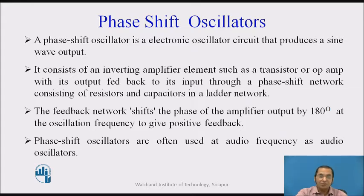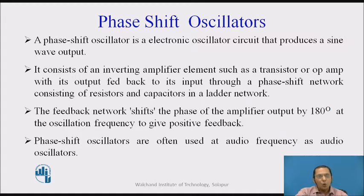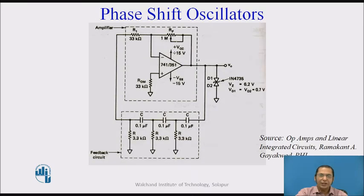A phase shift oscillator using an op-amp consists of two parts: one op-amp configured as an inverting amplifier, and a feedback network whose output is fed back. This feedback network also adds a phase shift, and the total phase shift around the loop is 360 degrees.